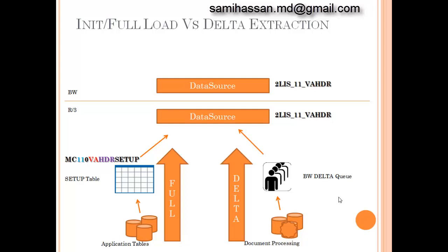Just like FI extraction, logistics has an initialization to start with and a delta mechanism to continuously load new documents and changes to old documents in SAP BW. However, the initialization and delta mechanisms follow separate methodologies. The objective of separating extraction procedures for LO applications was to minimize overhead on application processing, as logistics applications tend to generate and consume huge amounts of data compared to FI or generic applications.